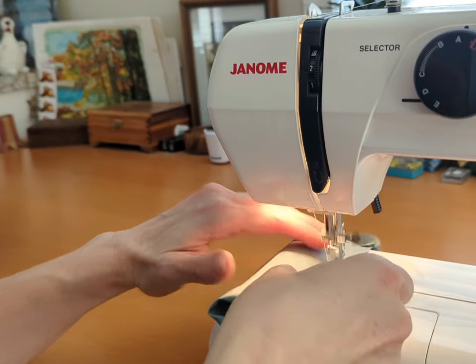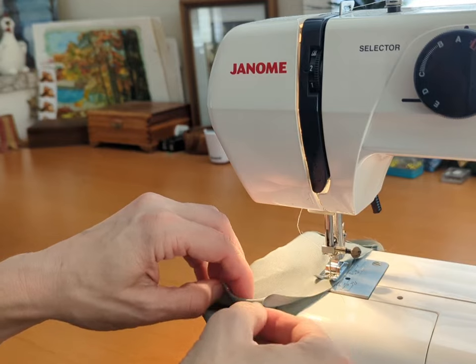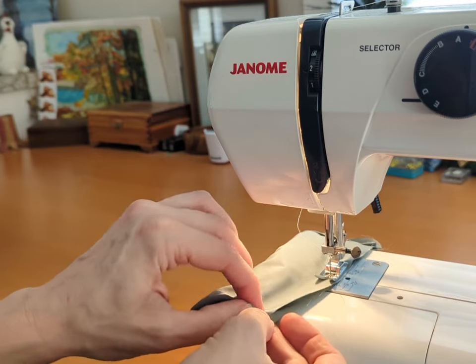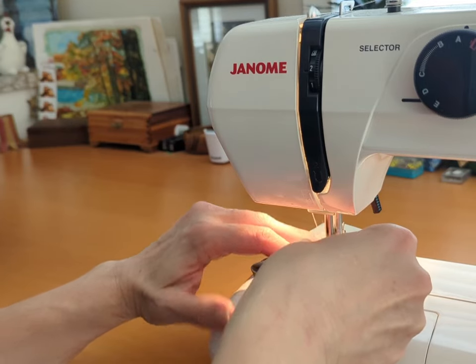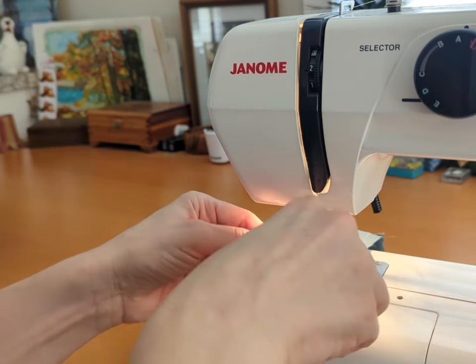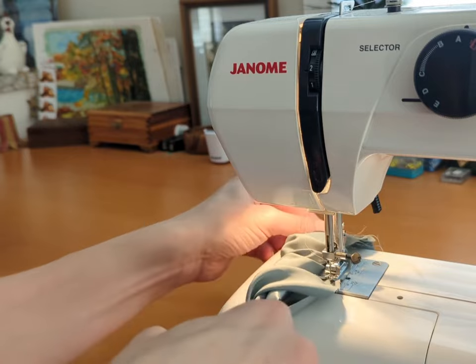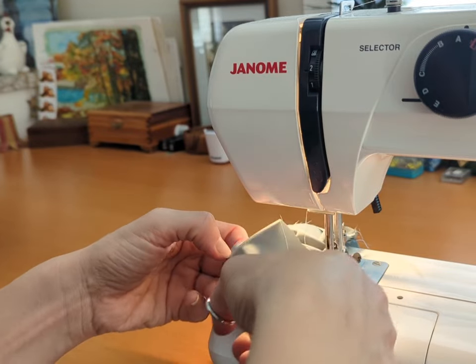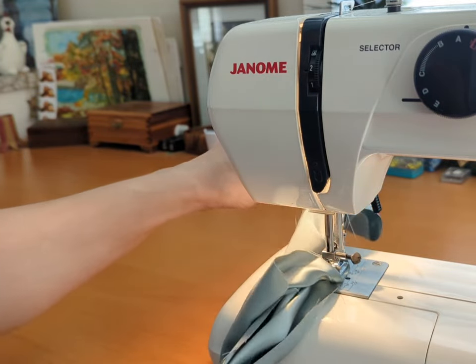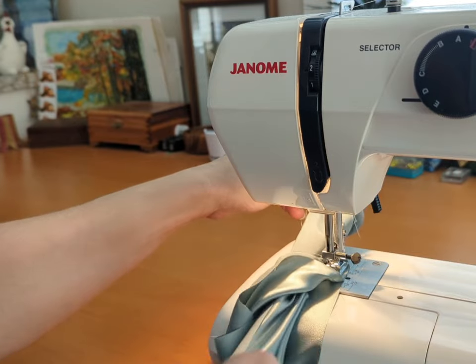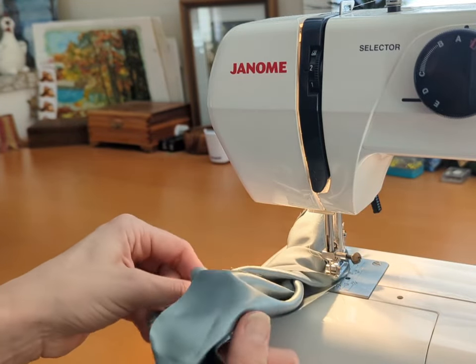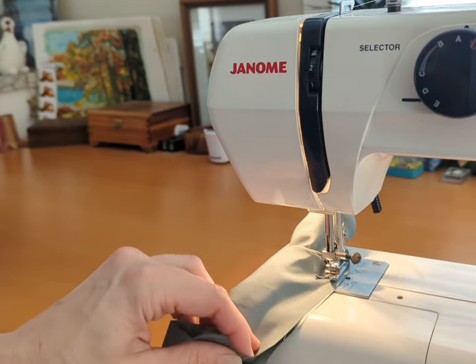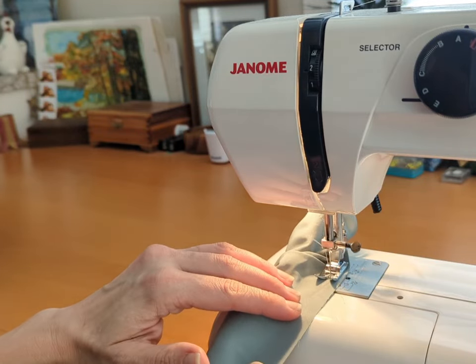And sew right up to the edge there, making sure I don't capture the fabric underneath. And then when I get to the point where I can't sew anymore, I pull my little burrito out. I'm using a little pair of tweezers here just to grab it because it makes it a little easier. But I'm literally just pulling it through the center. And then once I've pulled it through the center, I tuck it back in and I keep going.